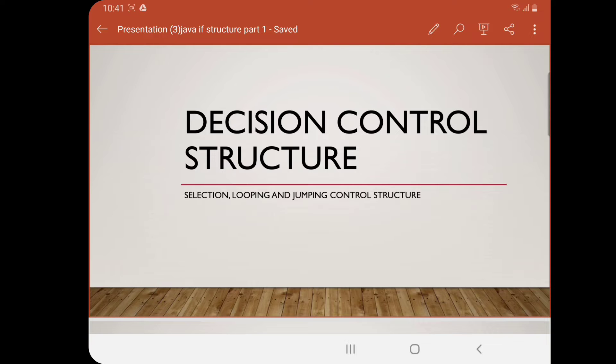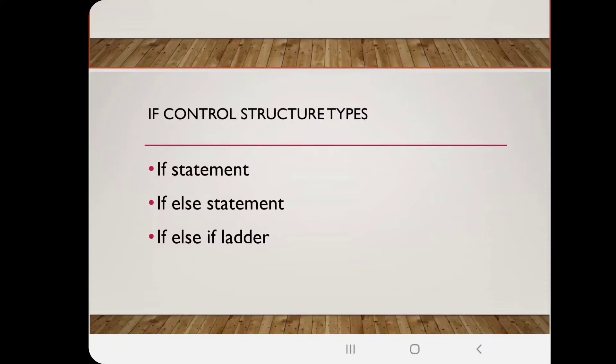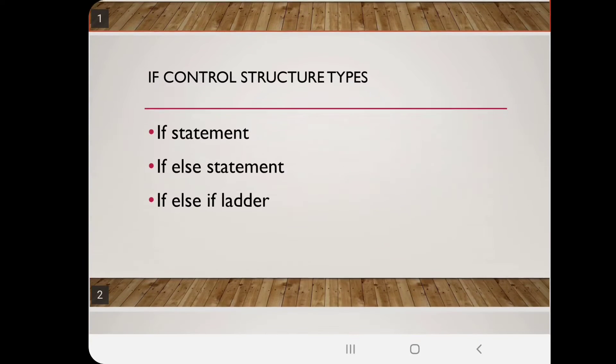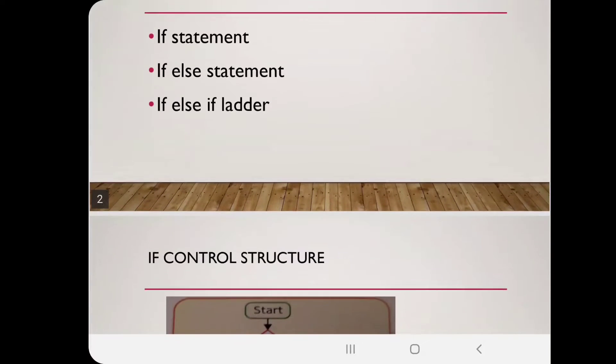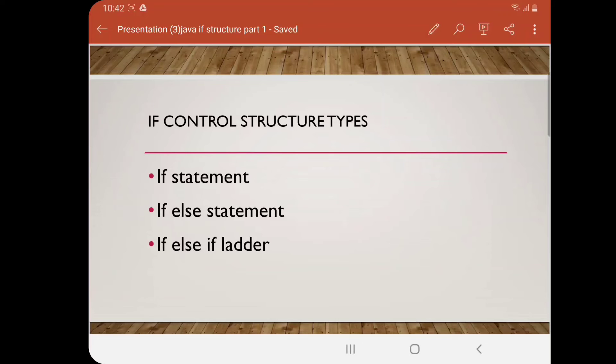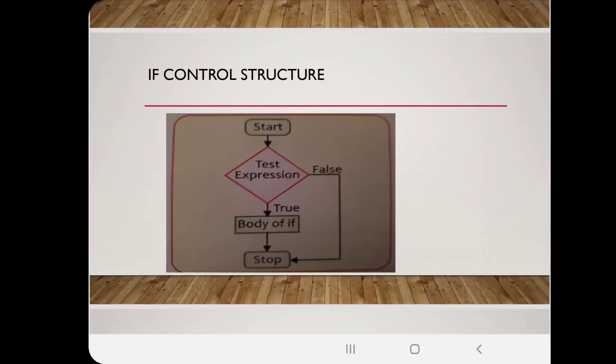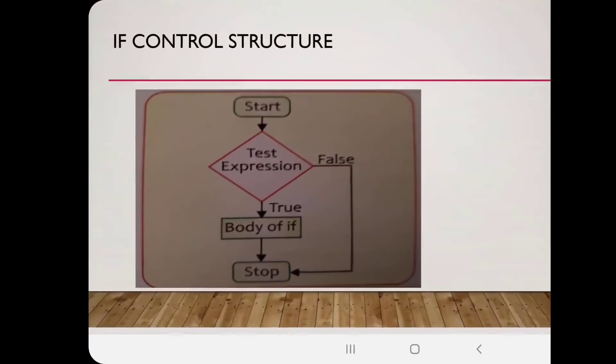Let's begin with the first: selection control structure. Their types are if control, then if-else, and then if-else-if ladder. First, we're going to talk about if control structure, which is of three types: if statement, if-else statement, and if-else-if statement. The if statement is referred to as bi-directional branching because it executes a block of statements. The if statement allows a program to choose whether or not to execute a particular statement.